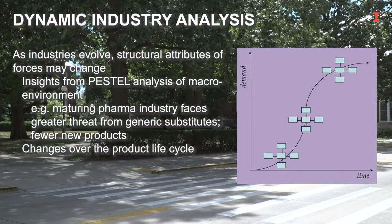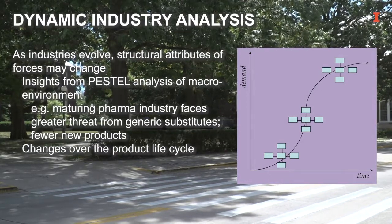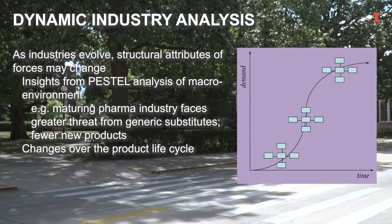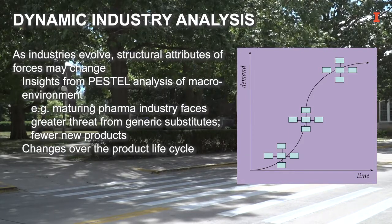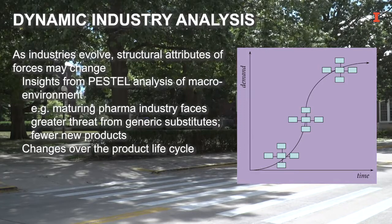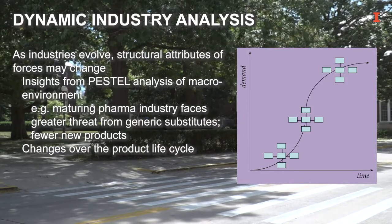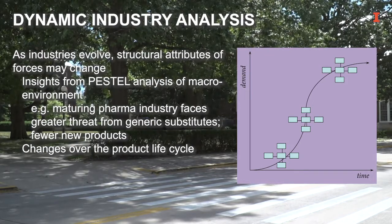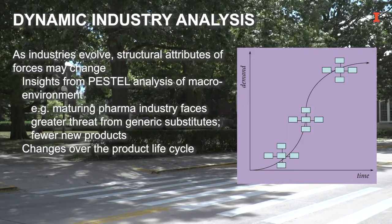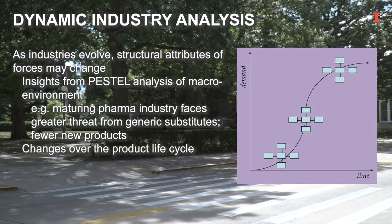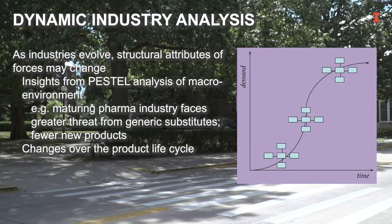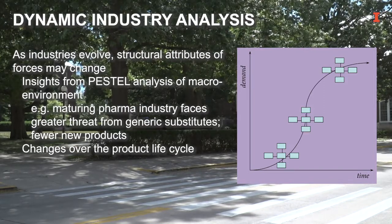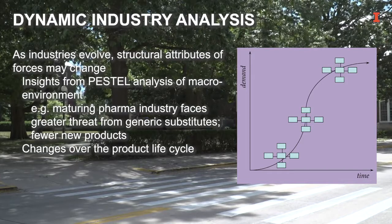Another approach is to rely on known patterns of industry evolution over time, such as the industry life cycle depicted here. We know, for example, that structural attributes like demand growth, scale economies, product innovation, and differentiation are likely to vary over the industry life cycle in systematic ways. Once we know the anticipated pattern of change, we can work out what it means for the industry by applying five forces analysis under the anticipated new structure. For example, we can work out that generic substitutes might become an important factor in the pharmaceutical industry because of patent expiration. And because the threat from substitutes is probably the pivotal force in this industry today, it might actually be valuable to focus on changes in this force going forward, as they are likely to have a direct impact on profitability.